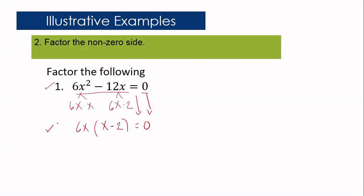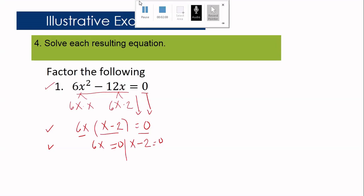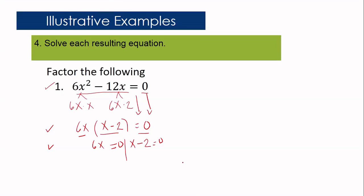Step 3: Apply zero product property, meaning we equate each factor to zero. So we have 6x equals 0 and x minus 2 equals 0. Step 4: Solve each resulting equation. For 6x equals 0, divide both sides by 6, giving x₁ equals 0. Using addition property of equality for x minus 2 equals 0, x₂ equals 2. Therefore, the solutions are 0 and 2.